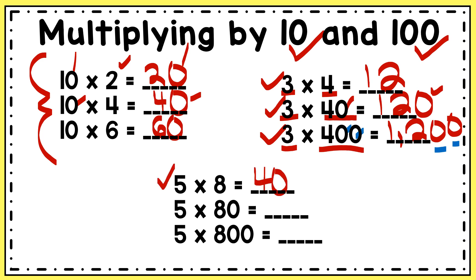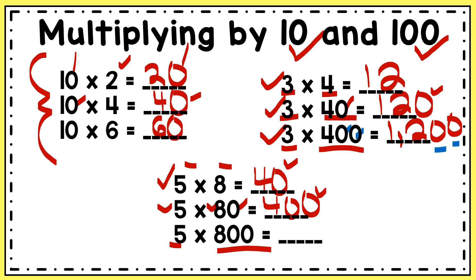Let's look at one more example: 5 times 8. The answer to that is 40, and 40 ends in a 0, but that's not because one of my factors ended in a 0 — that's just the answer to that multiplication fact. 5 times 80 is 400, and 5 times 800 is 4,000. These are some examples of multiplying by 10 and 100 and the patterns you'll see.